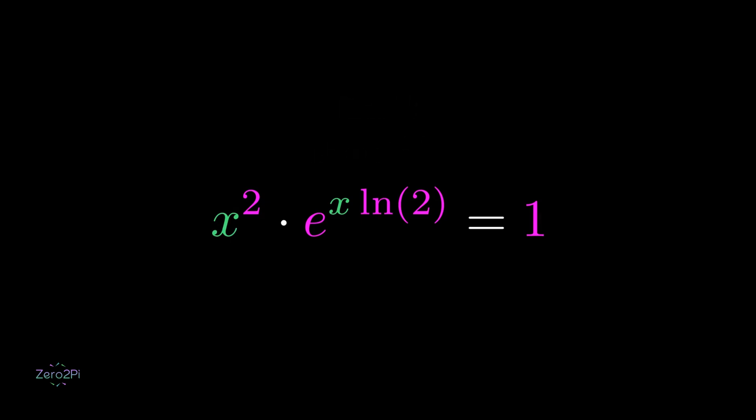Now, we'll take the square root of both sides. 1 becomes plus and minus. We multiply both sides by ln(2) over 2.